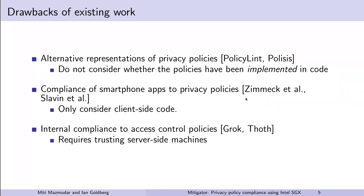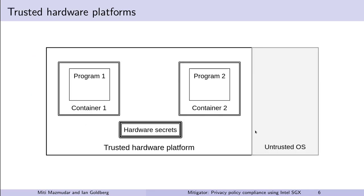Zemeck et al. and Slavin et al. have built systems that check the compliance of smartphone apps to privacy policies. However, these systems only check the client-side code. Although other systems have been proposed to check the compliance of server-side code to access control policies or similar encodings of privacy policies, they require users to trust the server-side machines. Mitigator reduces the trusted computing base required for such a compliance check from the entire OS on the server-side machines to only a small module on them, namely a trusted hardware platform.